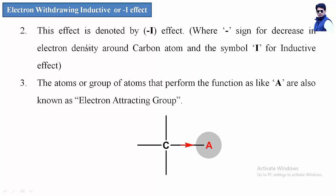This effect is denoted by minus I, where the minus sign shows the decrease in electron density around the carbon atom, and I is the symbol for inductive effect. The atoms or groups of atoms that perform this function, like A, are also known as electron attracting groups. If A withdraws electron density from the carbon atom, the electron density around carbon decreases while around atom A it increases, so such groups are also known as electron attracting groups.